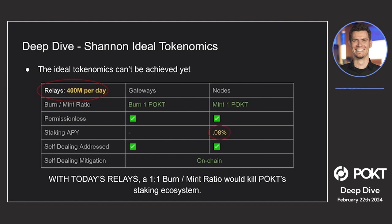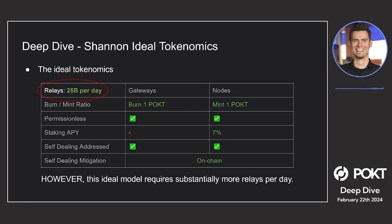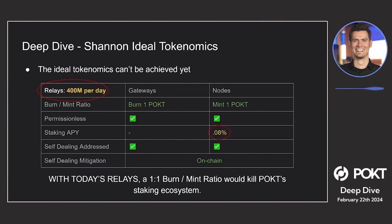The ideal tokenomics can't be achieved yet because relays are not at a level where this model could work. Without relays being somewhere around 25 billion per day, if we applied this tokenomics model to Shannon at launch, everything would look great except for the staking APY — which would be less than 1%, literally around 0.08%. That would be a huge transition from Morse to Shannon, reducing everyone's rewards to the point where it would kill the POKT staking ecosystem.